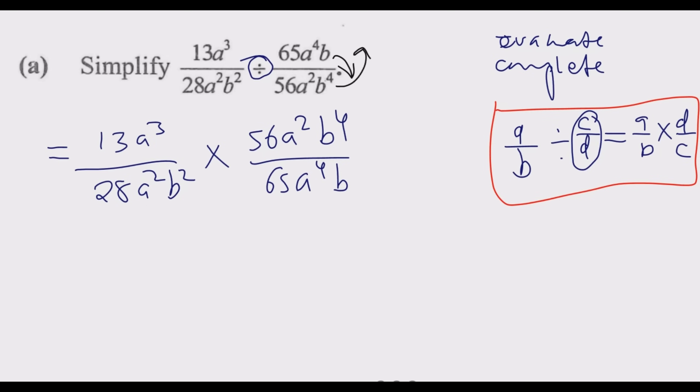So just look for what is common. 13 into 13 is 1, 13 into 65 is 5. Then 28 into 28 is 1, 28 into 56 is 2. We're done with numbers. For a: a² into a² is 1, a² into a³ is just a. That's a³ divided by a² which is a³⁻² which is a¹.